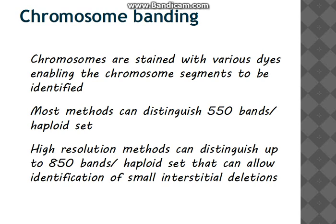Now about banding. To study chromosomes, they are stained with various dyes so that segments of the chromosomes can be identified. Most methods can recognize up to 550 bands, but higher resolution methods can distinguish up to 850 bands, which allows us to identify small rearrangements.